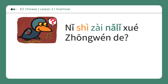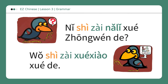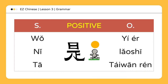你是在哪里学中文的? Where did you learn Chinese? 我是在学校学的。 I learned it at school. The positive form is very direct: subject plus 是 plus object. 我是一二。 I am Iyer. 你是老师。 You are a teacher. 他是台湾人。 He is Taiwanese.